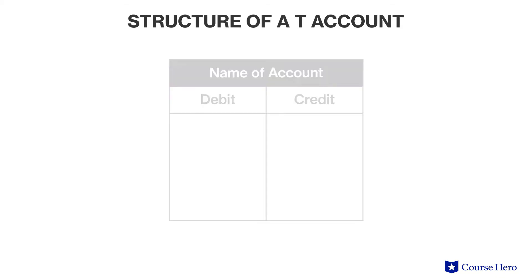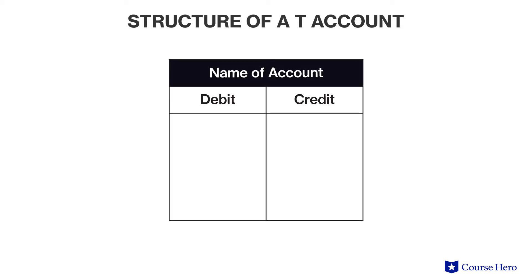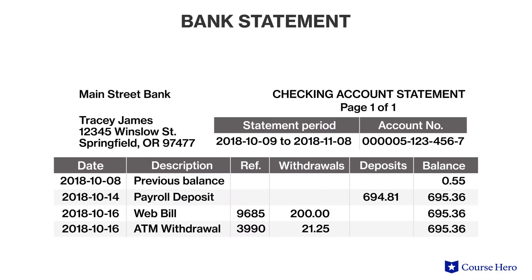By tradition, and for no other reason, debits are on the left and credits are on the right. In the context of double entry accounting, debits and credits do not carry the same meaning as their colloquial use. For example, on a bank statement, there might be withdrawals on the left and deposits on the right.